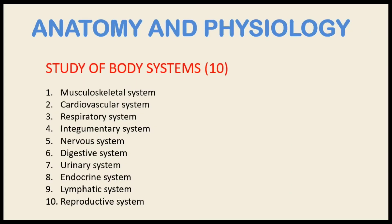To get into medical coding as a fresher, you should know the 11 body systems. These are: skeletal system, cardiovascular, respiratory, integumentary, nervous, digestive, urinary, endocrine, lymphatic, and reproductive system. Certifications are a separate topic to be discussed later.